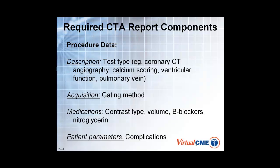In terms of the acquisition, you should describe what the gating method is — is this going to be a prospectively gated study where you have a single reconstruction available, perhaps for reducing radiation dose, or is it going to be retrospective gating? Those have implications for study quality in some cases. What kind of medications are given, what kind of contrast, how much contrast — did you use beta blockers, did you use nitroglycerin — should be recorded on every test.